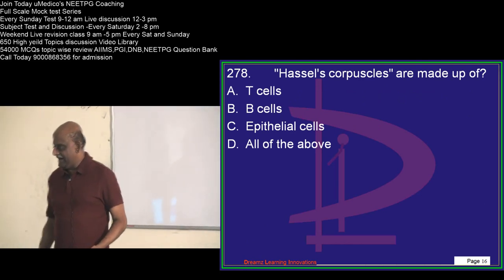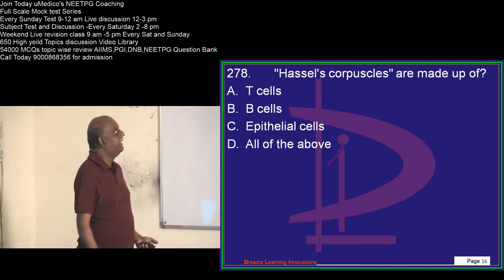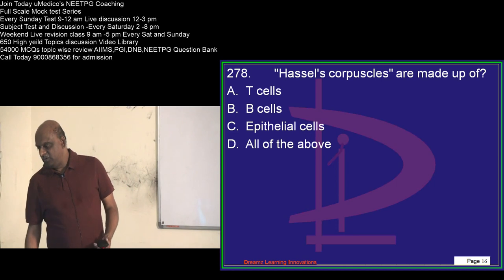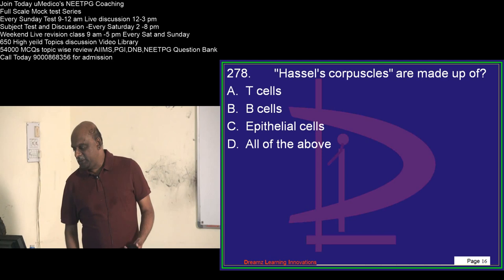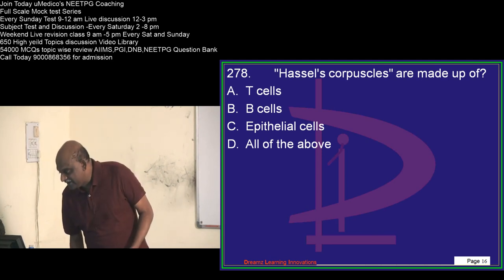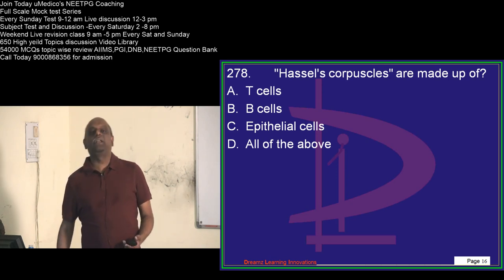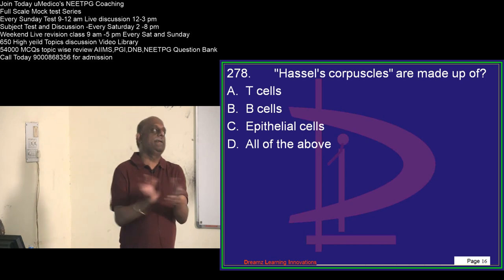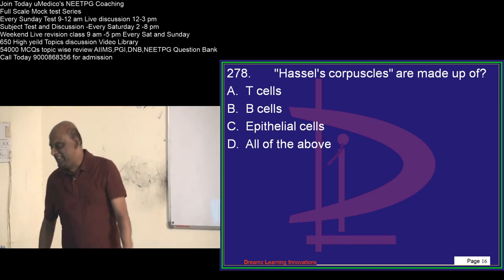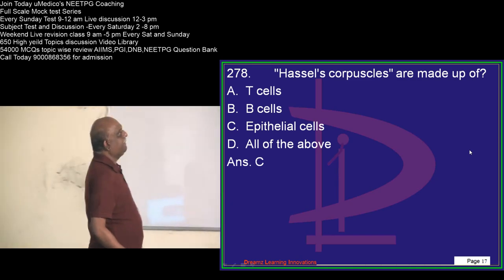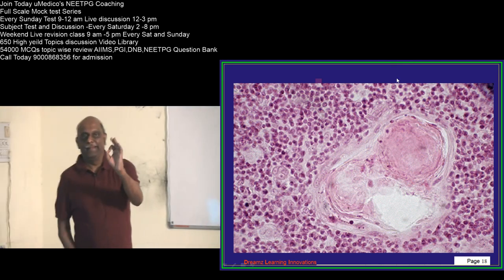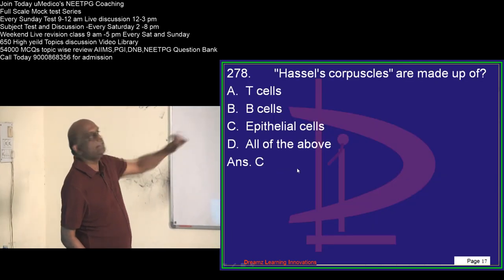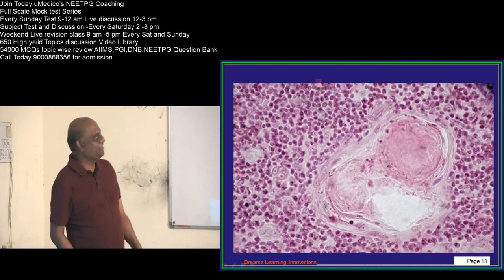This you should answer correctly — let me see how many of you will get it right. Hassall's corpuscles — what are they made up of? Question number 278. Praveen says T-cells, Vishal says T-cells. Nadeem is absolutely right — give one big clap to Nadeem. Hassall's corpuscles are made of epithelial cells. You should not make a mistake on this at this late stage of exam preparation.